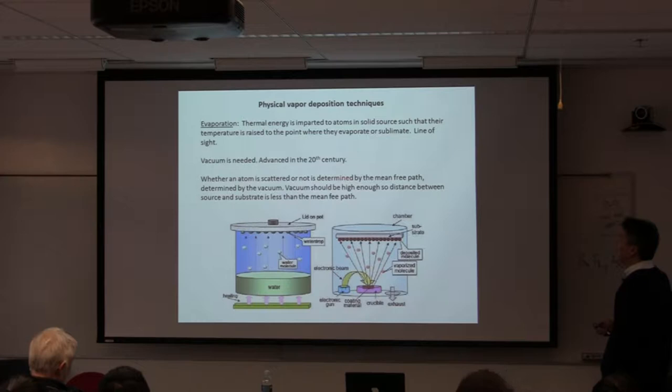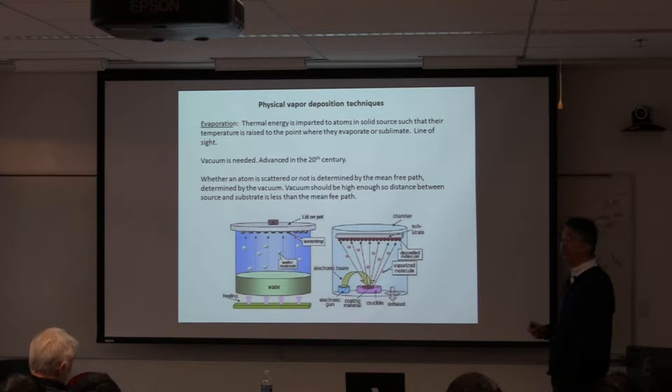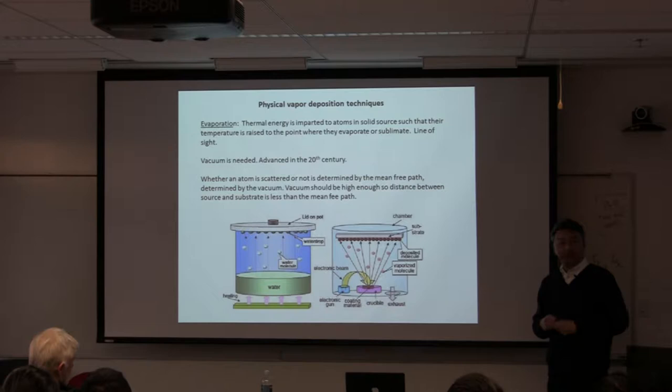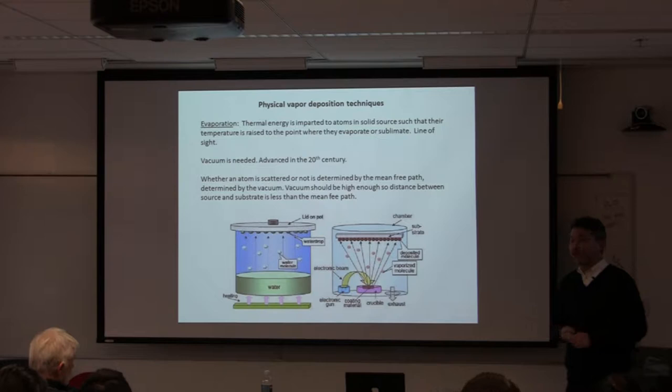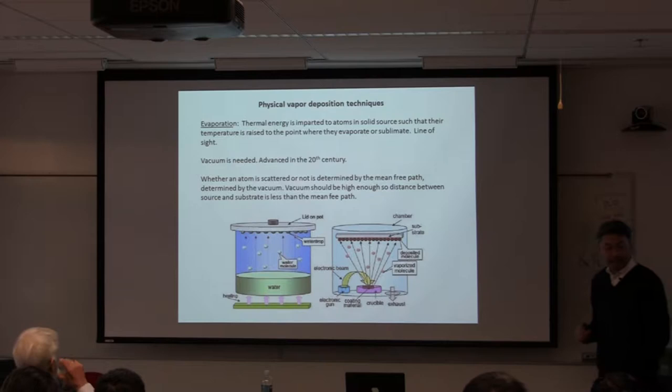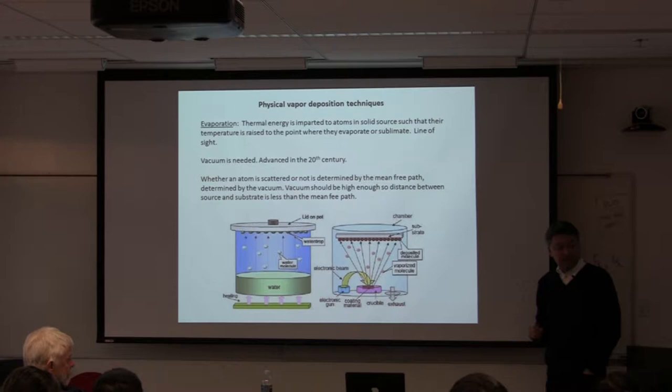Vacuum technology took off in the 20th century, helped by another industry that also required huge cans of stainless steel that had to be absolutely airtight — the dairy industry. In the early days, people actually took things from dairy farms to make vacuum chambers, and a lot of old flanges have O-rings from that industry. They were used to making big things, and that's what MBEs are.